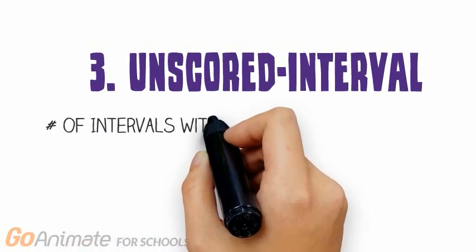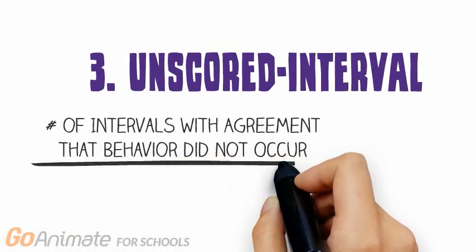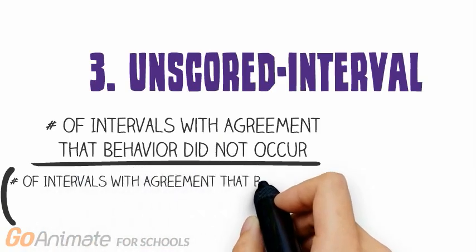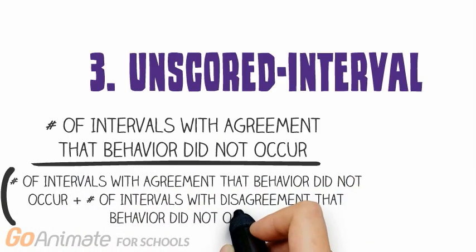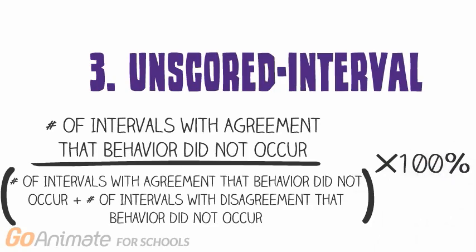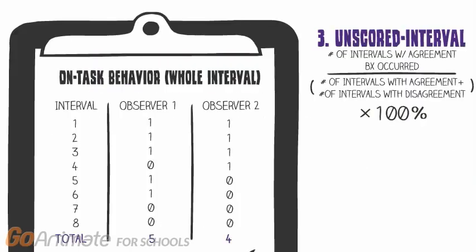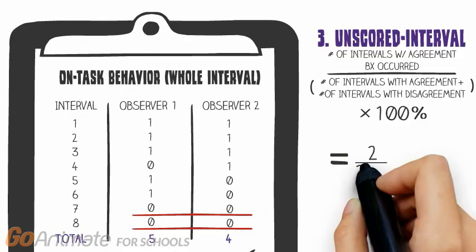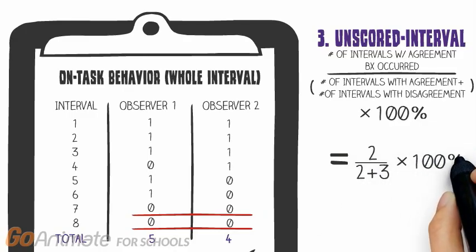Unscored interval IOA only uses intervals in which one or both observers record the absence of a target response. Similar to scored interval IOA, this approach provides a more conservative measure of agreement. In the sample data, we ignore the first three intervals for calculation, as both observers scored a response in those intervals. The IOA statistic is calculated from the remaining five intervals. There was only agreement on two of the five intervals, the seventh and the eighth, so the agreement score is 40%.